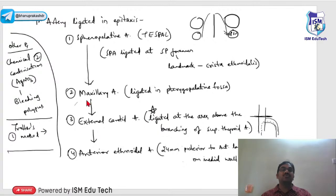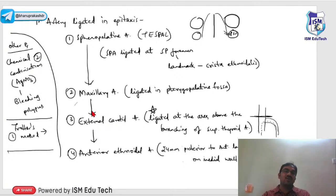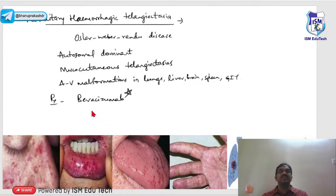For bleeding polyps on the nasal septum, chemical cauterization with silver nitrate can be applied; if ineffective, surgical cauterization in OT is performed. Trotter's method is used for immediate first aid — press the nose and breathe through the mouth for five minutes.